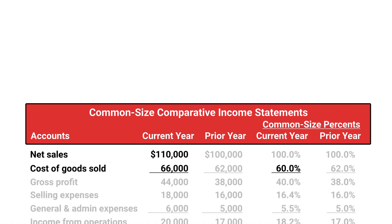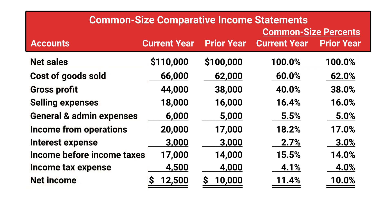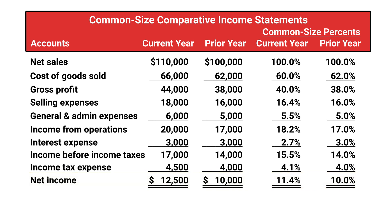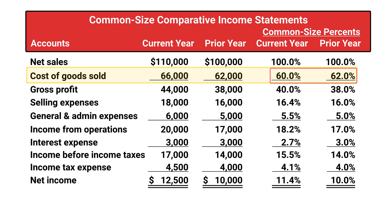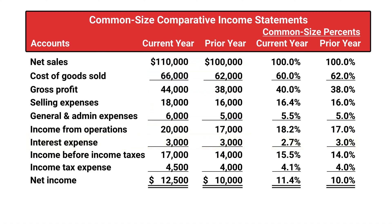We can do this common size computation for all income statement items using net sales as the base amount for the current year and the prior year. Using these common size percentages, we see that net income increased from 10% to 11.4% of net sales. This means that total expenses make up a smaller percentage of net sales for the current year compared with the prior year. This is a positive change and is mainly due to the decrease in cost of goods sold from 62% to 60%. We also see that interest expense decreased from 3% to 2.7% of net sales, because net sales increased while the dollar amount of interest expense did not change. However, common size percentages for selling expenses and for general and administrative expenses both increased. This is not a good change and the company will need to watch those costs to keep them under control.